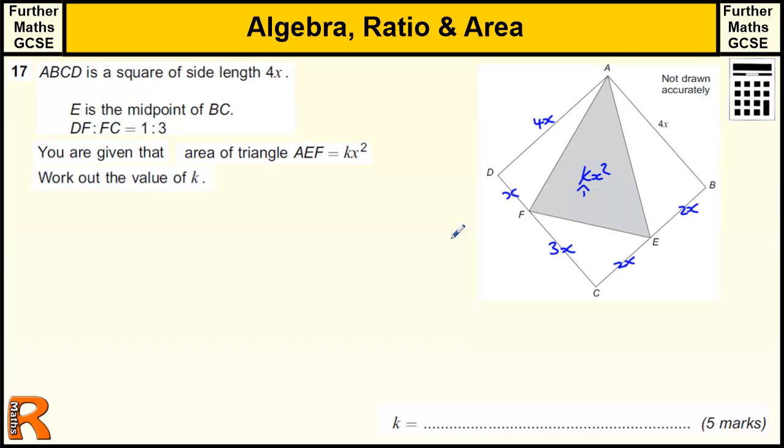So with this sort of question, hopefully you can see that if we take away these triangles around the outside of the triangle we want, away from the square, then we will get the area that's left.